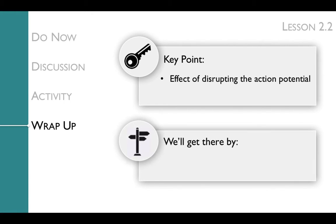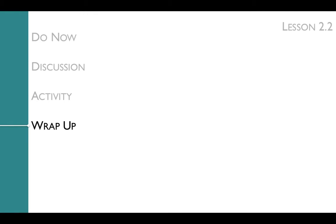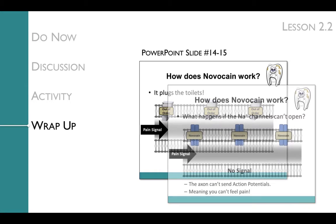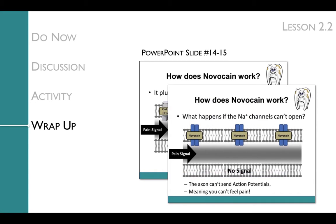The key point of the wrap-up is to think about the effect of disrupting the action potential. You'll revisit the question of how Novocaine works. Slide 14 shows students that Novocaine plugs the sodium channels, and slide 15 asks students what would happen if the sodium channels can't open. If the sodium channels can't open, then we can't send an action potential, and you won't feel any pain.